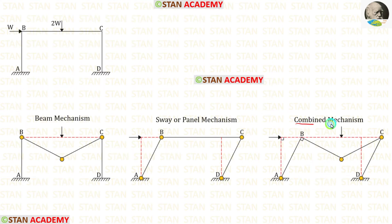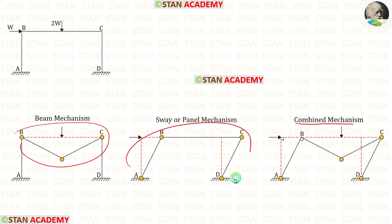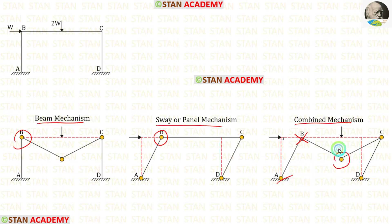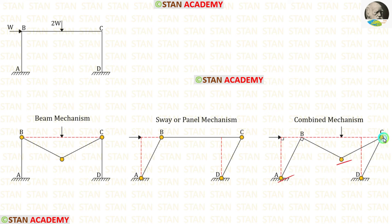Now let us do the combined mechanism. In the combined mechanism we combine the beam mechanism and the sway mechanism. In both mechanisms the joint B has a plastic hinge, so it is cancelled. The plastic hinges occur at point A, under the point load, at point C, and at point D — giving a total of 4 plastic hinges.